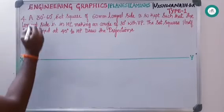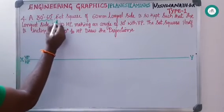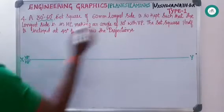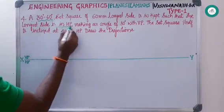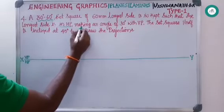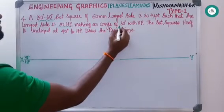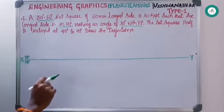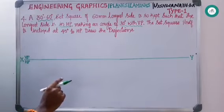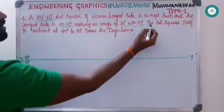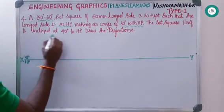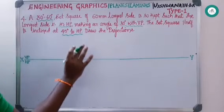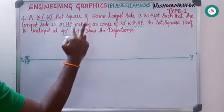Coming to the next question: a 30-60 degree set square of 60 mm longest side is kept such that the longest side is in HP — this is your first condition — making an angle of 30 degrees with VP — this is your third condition. Make a note: when the lamina is resting on HP, you should satisfy the HP condition first and VP condition next. The set square itself is inclined at 45 degrees to HP — this is your second condition. Draw the projection.